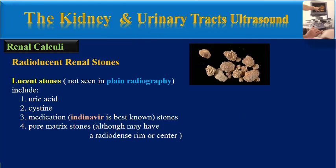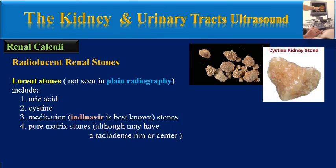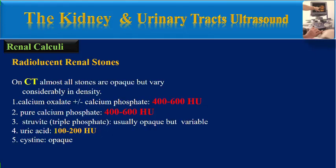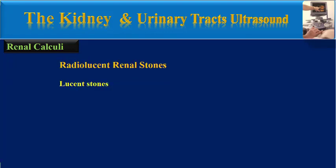Radiolucent renal stones which are not seen in plain radiography include uric acid stones, cysteine stones, medication stones best known as indinavir stones, and pure matrix stones which may also have a radiopaque center. Generally on CT, almost all stones are opaque but vary considerably in density. Calcium oxalate and pure calcium phosphate stones have the highest Hounsfield units, about 400 to 600. Struvite stones are usually opaque but variable. Uric acid stones have 100 to 200 Hounsfield units, and cysteine stones are also opaque.